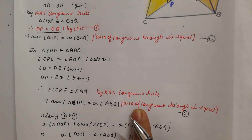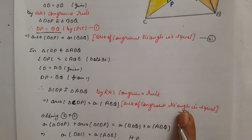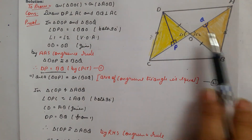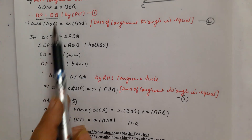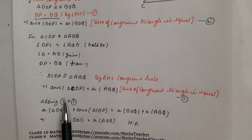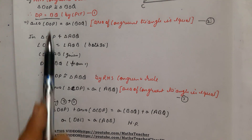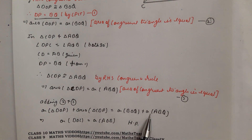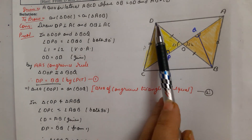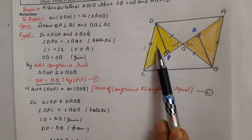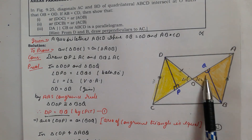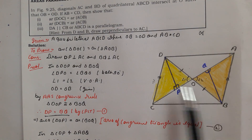From Exercise 9.1 we know that area of congruent triangles is equal. Now we add these two pairs of congruent triangles: adding Area(DOP) + Area(CDP) gives the big triangle Area(DOC), and adding Area(BOQ) + Area(ABQ) gives Area(AOB). So Area(DOC) equals Area(AOB) — the first part is proved.